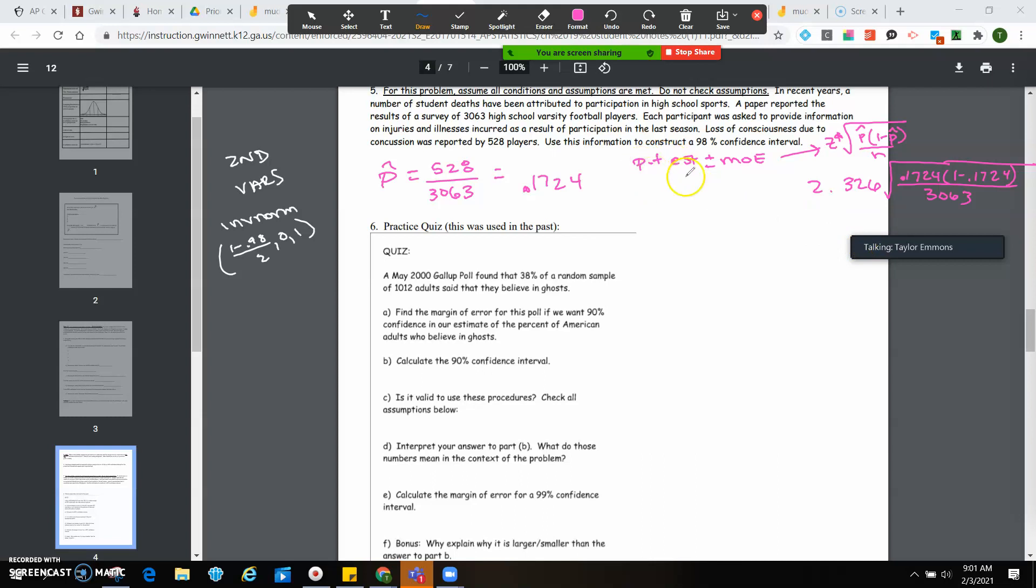Okay, and remember, our point estimate was 0.1724, and we're going to add and subtract this nonsense that we got over here. Okay, so when you do that, you get an interval from 0.1565 and 0.18826.